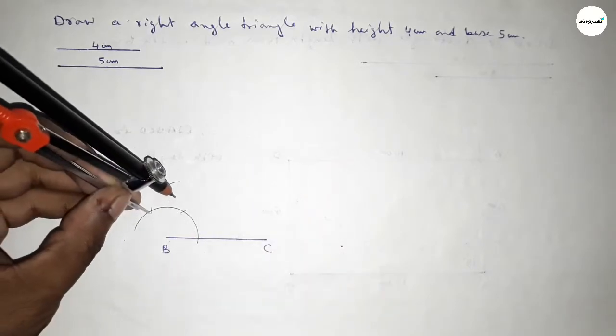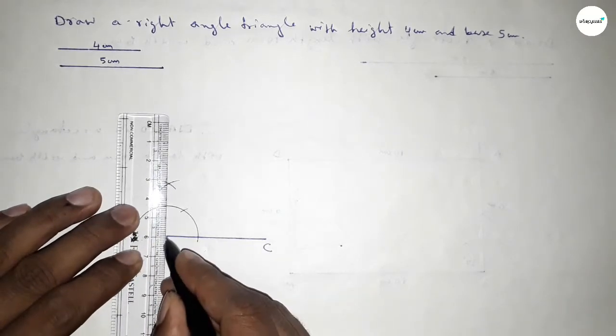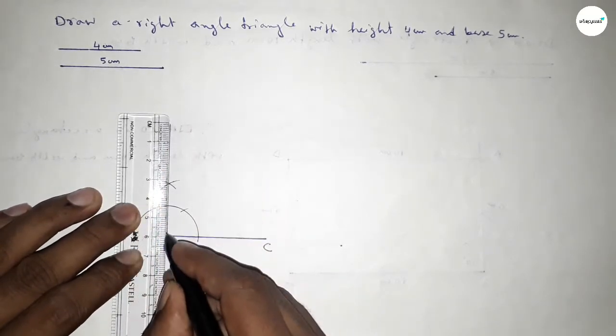With the same length, putting the compass here and cut here. So both the curves intersect at a point. Now joining this side to get here a 90 degree angle.